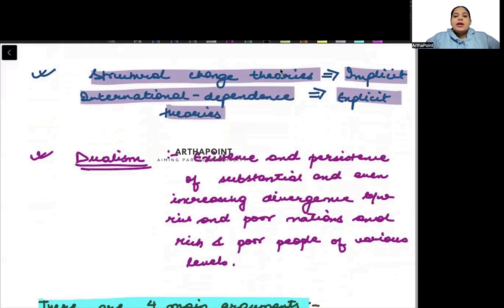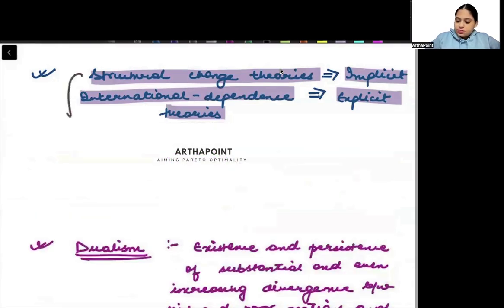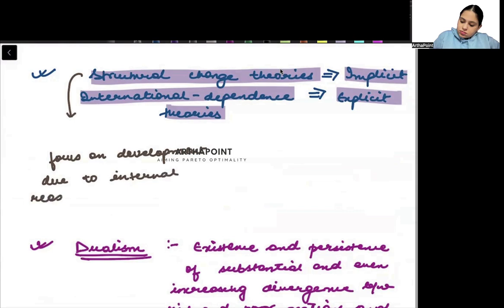Implicit means what? Implicit theories are those theories which focus on development due to internal reasons. They focus on development due to internal reasons. For example, savings rate, capital accumulation rate, etc.